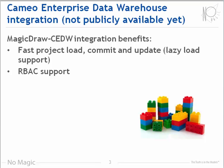only the changed elements are sent to the server instead of the entire model. The same holds true for the update function. When you update your project, MagicDraw will only load changed elements from the server to the client. Consequently, these operations become very fast. In addition, Cameo Enterprise Data Warehouse will use a role-based access control permission system, so permissions may be assigned to roles instead of just individuals. The first commercial version of the Enterprise Data Warehouse will be available in version 18.1 of our products.